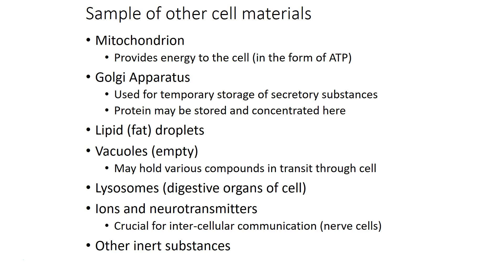For example, we have a variety of other cell materials. Some might be found in all cells, like mitochondria that provide energy to the cell. Others might be found only in specialized cells, like ions and neurotransmitters that help with intercellular communication in nerve cells. This level of detail is not going to be terribly important for this class. We'll go into the detail when we cover that particular piece of anatomy.